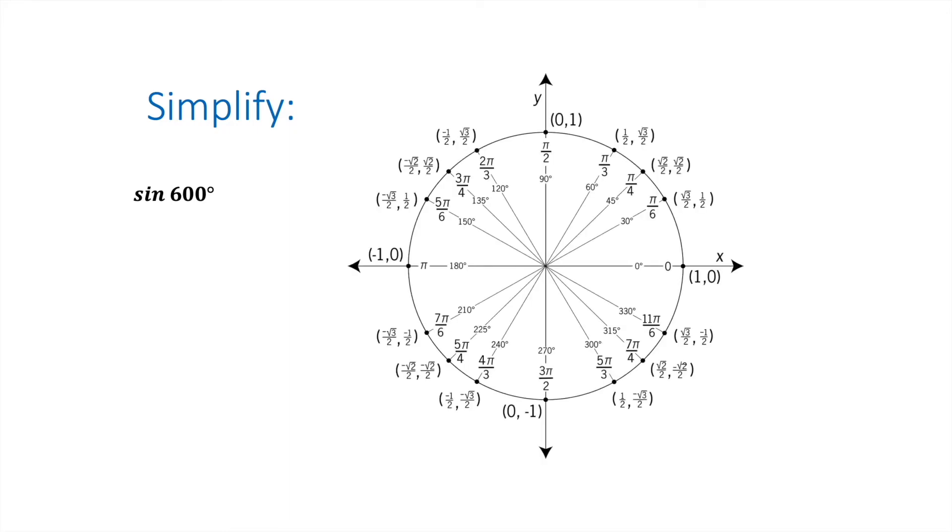In this one, we're asked to simplify sine of 600 degrees. We're going to be using our unit circle on this.